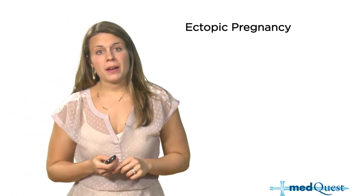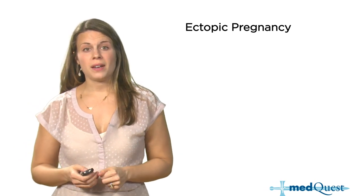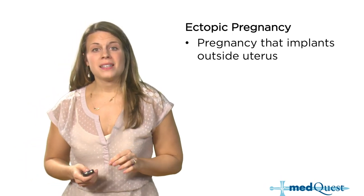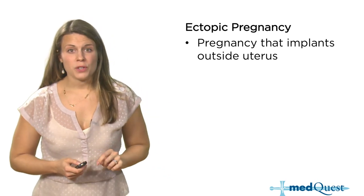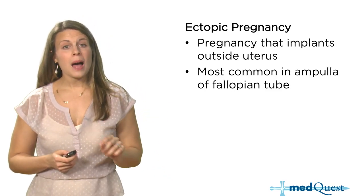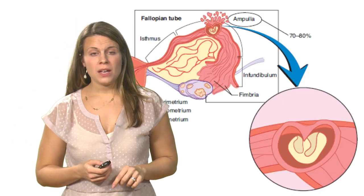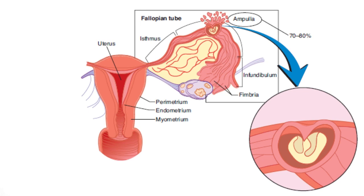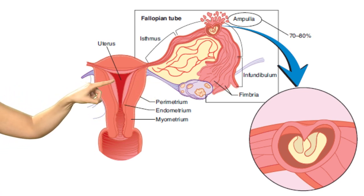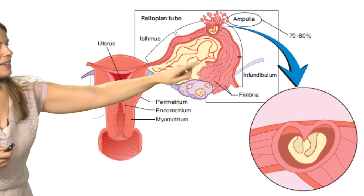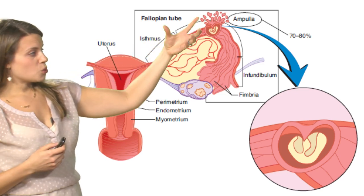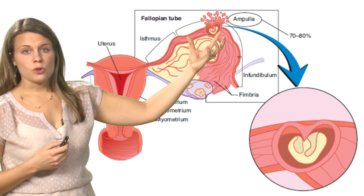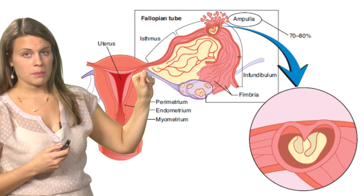Ectopic pregnancy is a pretty high-yield topic for Step 2 — being able to diagnose and identify one. This is a pregnancy that implants outside of the uterus, and it's most commonly found in the ampulla of the fallopian tube. Looking at normal female pelvic anatomy, you can see the uterus, where a normal pregnancy implants. The fallopian tube's ampulla is that swelling portion of the tube, and this is typically where an ectopic pregnancy will implant.